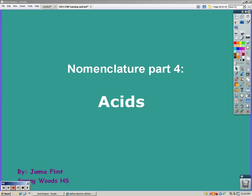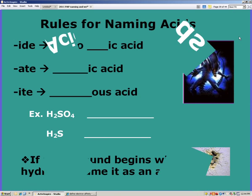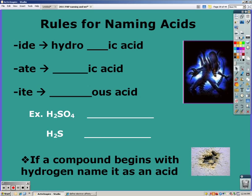Part 4 Acids. There are three rules for naming acids. If it ended in IDE, it goes to hydroic acid. If it ended in ATE, it goes to ic acid. And if it ended in ITE, it goes to OUS acid.